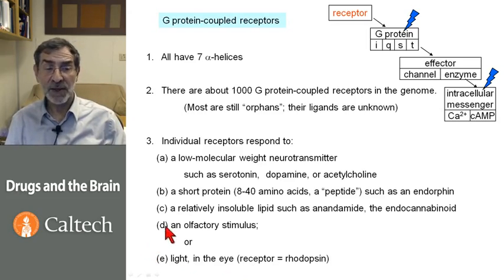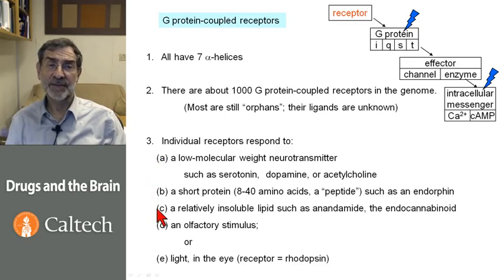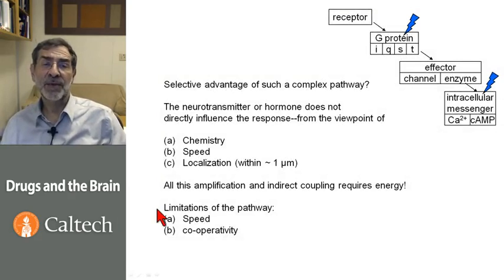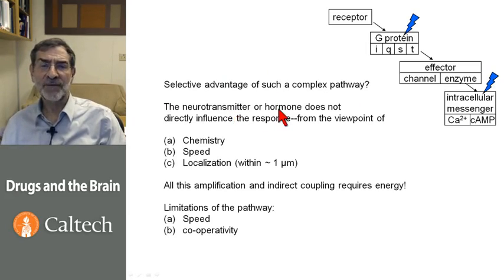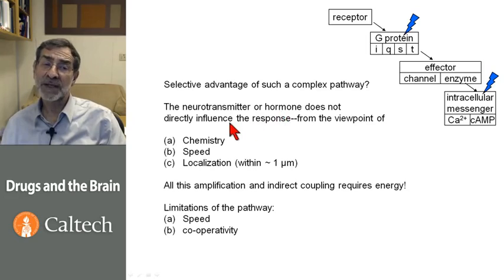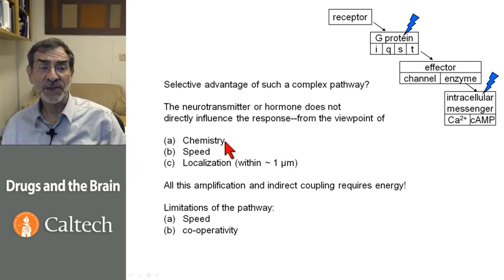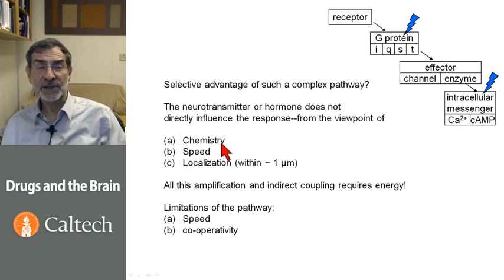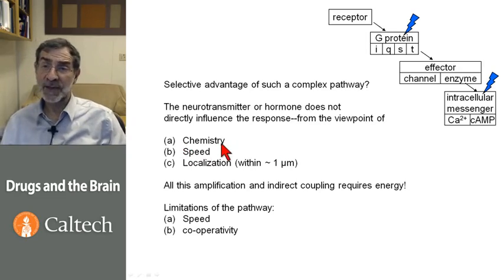We can't cover olfactory receptors and rhodopsin in this course; we will mostly concentrate on the neurotransmitter, peptide, and lipid types. This is a complex pathway. What is the selective advantage of such complexity? Mostly, the neurotransmitter or hormone does not directly influence the response — the response is downstream. It is not directly influenced by the neurotransmitter or hormone from the viewpoint of chemistry, because the chemistry of the initial agonist-receptor interaction is quite different from the ultimate chemistry that occurs inside the cell.